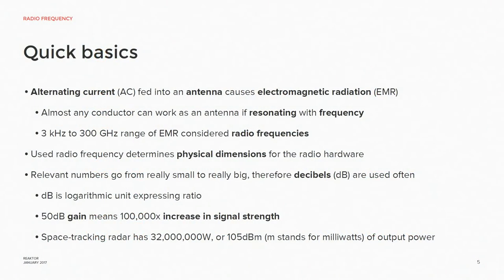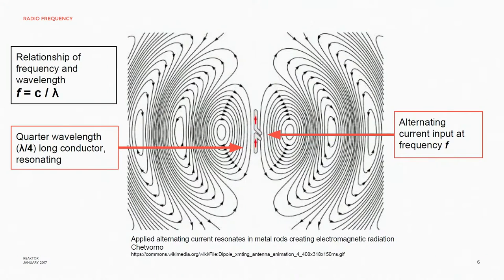Since the numbers are usually really small or really big, you will very quickly get accustomed to reading decibels. Because it's a logarithmic unit, it can be quite small while still expressing a big scale of numbers. For example, if you have 50 dB of gain, it means 100,000 times increase in signal strength. Another interesting trivia: a radar that can track objects in space with 35 million watts of output power is only 105 dBm, where the M stands for milliwatts. So if you input alternating current into these antennas and it's of the right wavelength, they will resonate and radiate — creating radio waves, as simple as that.